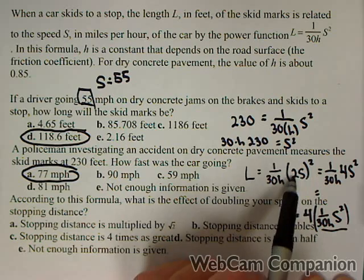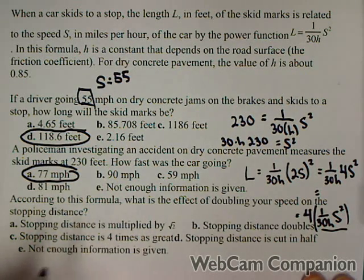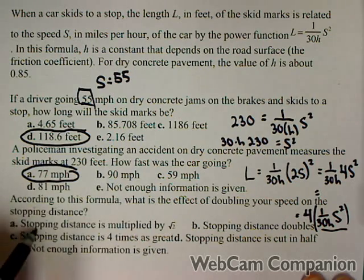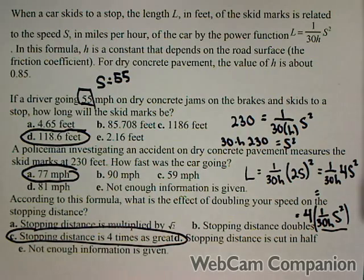So what we found is because of the square, doubling the speed results in 4 times the length of the skid mark. And so that's answer C, the stopping distance is 4 times as great.